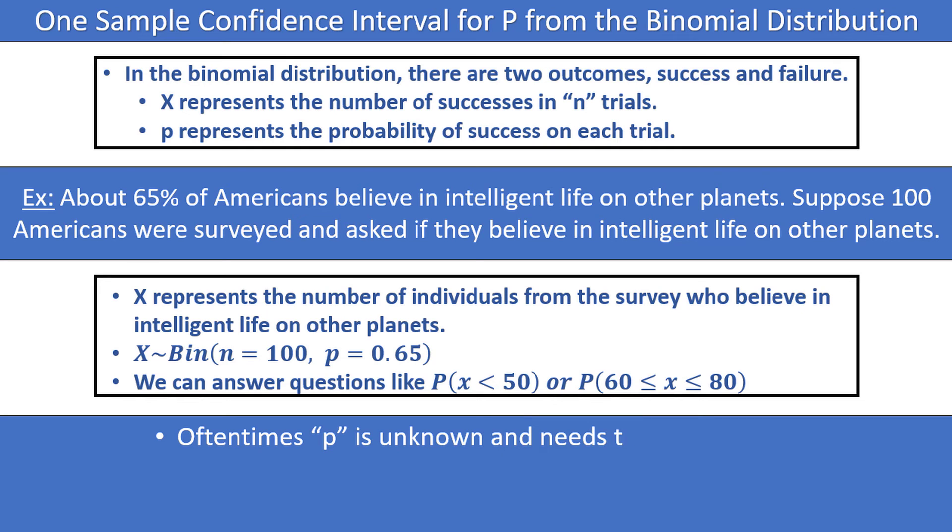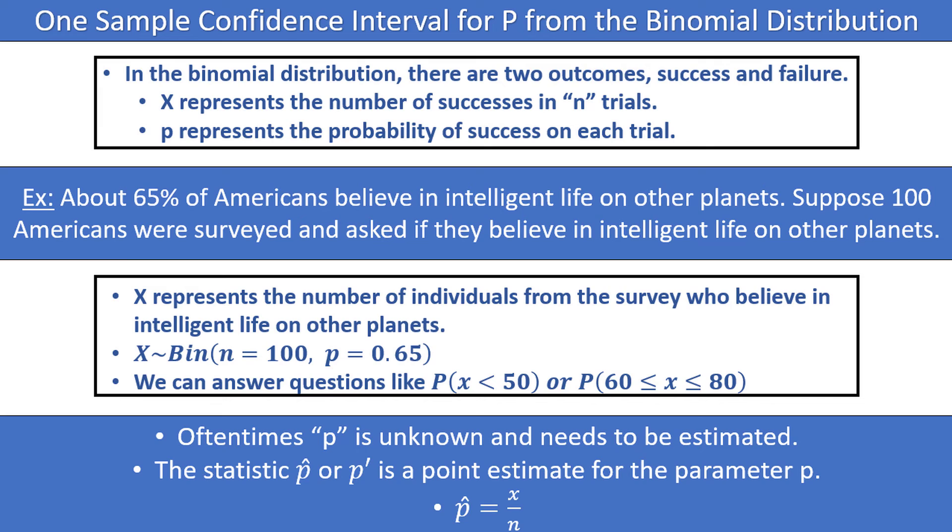Oftentimes, p is unknown and needs to be estimated. The statistic p-hat or p-prime is a point estimate for the parameter p. Either notation is fine, but p-hat is more common, so that's what I'll be using in my videos. p-hat is equal to the number of successes x divided by n, the number of trials, or the sample size. p-hat is the value that we will build our confidence interval around to estimate p.